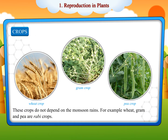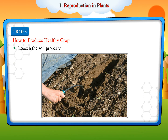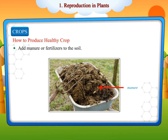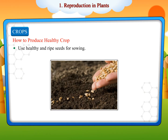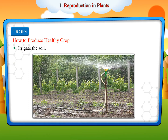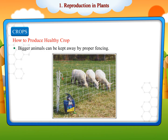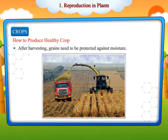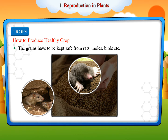How to produce a healthy crop: Loosen the soil properly. Add manure or fertilizers to the soil. Use healthy and ripe seeds for sowing. Irrigate the soil. Use pesticide to protect from pests. Bigger animals can be kept away by proper fencing. After harvesting, grains need to be protected against moisture. The grains have to be kept safe from rats, moles, birds, etc.